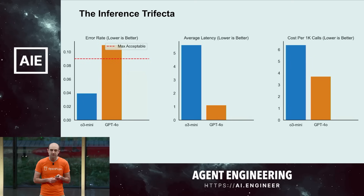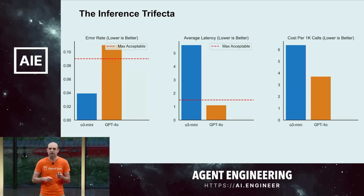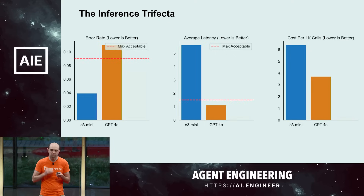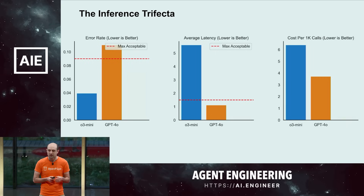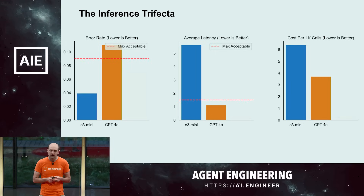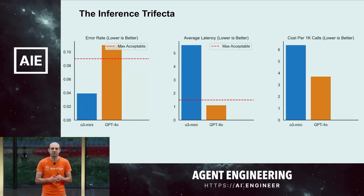From a latency standpoint, their agent is a real-time system that needs to be able to respond quickly to move through the whole flow to get the information it needs, so they did have a hard latency cutoff. We see a wide variety in this for what it's worth.